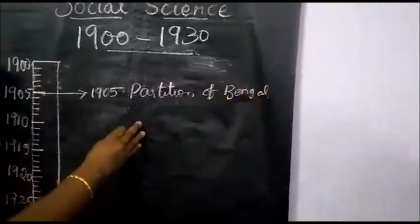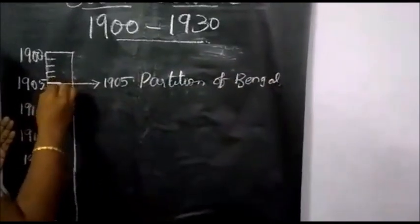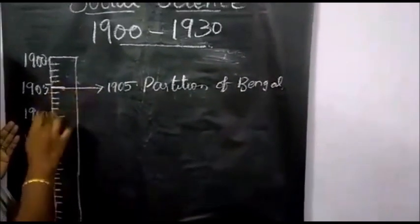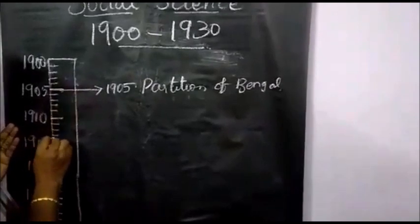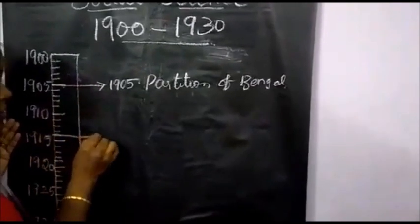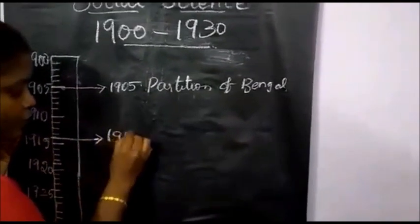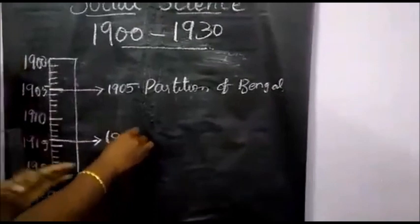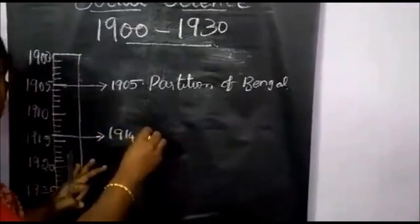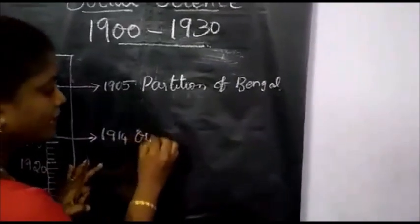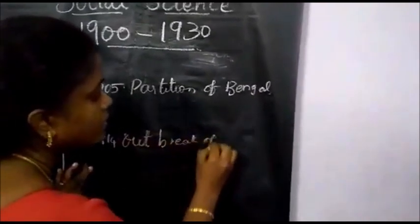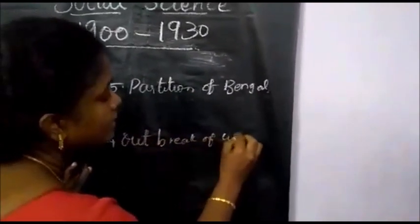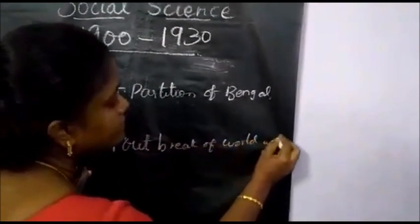Then the next event is 1914. Counting from 1905: 5, 6, 7, 8, 9, 10, 11, 12, 13, 14 — so here is 1914. Draw a line to 1914. What is the event? Outbreak of World War 1.